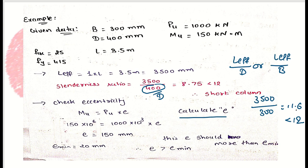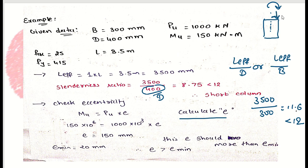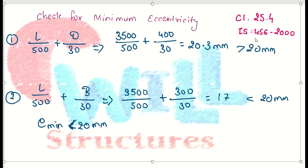The next step is to check eccentricity. First, calculate the design eccentricity e. Eccentricity is the distance from the point of application of load to the central axis of the column. Using the formula M_u = P_u × e, and substituting the values, the design eccentricity is 150 mm. As per clause 25.4 of IS-456 2000, the minimum eccentricity formula is: e_min = (unsupported length / 500) + (lateral dimension / 30).